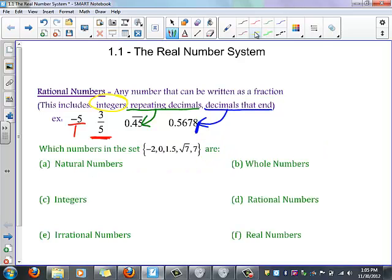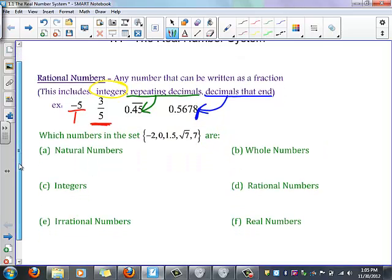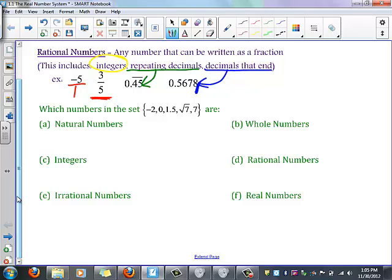So now, given this set, we're going to list which ones are each of these categories. So starting with natural numbers, these are your counting numbers, and so in our case it's just going to be 7.